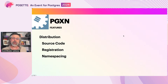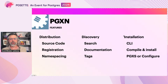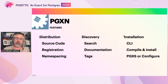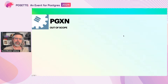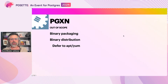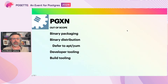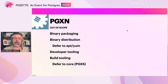The features were to include distribution of source code, as well as user registration and namespace management so there would be no conflict between named extensions. PGXN also aimed to provide comprehensive search features and the ability to browse and read well-written documentation. Individual releases could also be tagged for better discoverability. A command line client would provide a simple interface to download, compile, and install extensions. A number of features were out of scope, including binary packaging — PGXN would be for source code distribution only. It seemed too much to take on support for a wide variety of platforms, so we deferred binary distribution to the community Apt and YUM repositories. PGXN also would not include developer tooling or build tooling, since there were already solutions most notably PGXS.